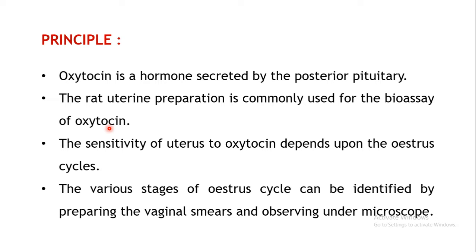While using rat uterus, one major concern is the estrus cycle. The sensitivity of the uterus towards oxytocin completely depends upon the estrus cycle — specifically, which stage of the estrus cycle the uterus is in. Oxytocin can induce contractions in the uterus only when the uterus is in a particular stage of the estrus cycle.